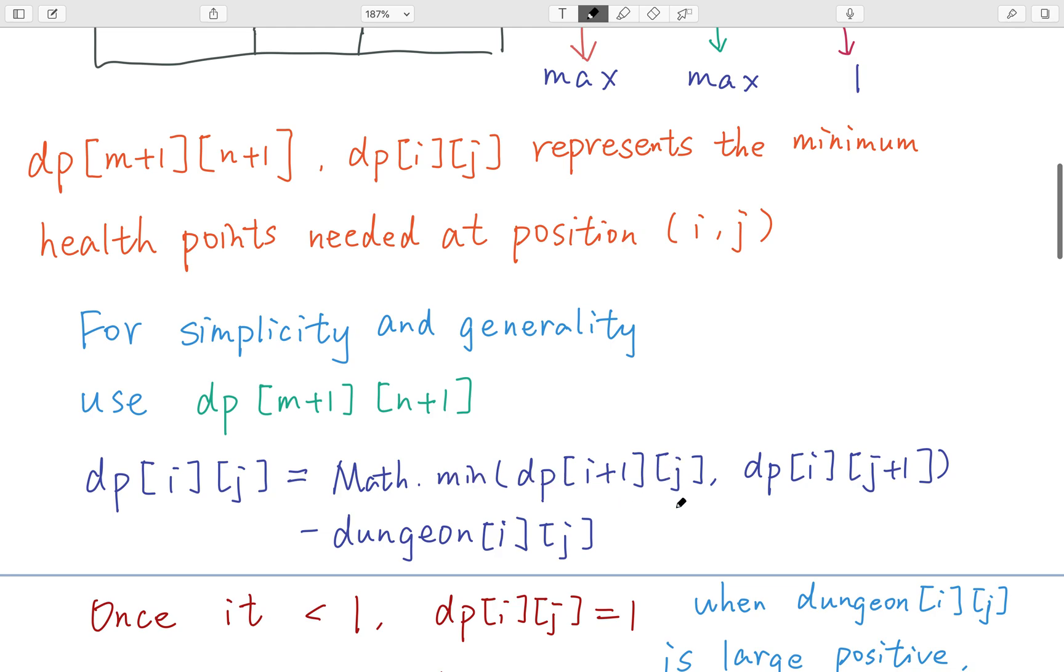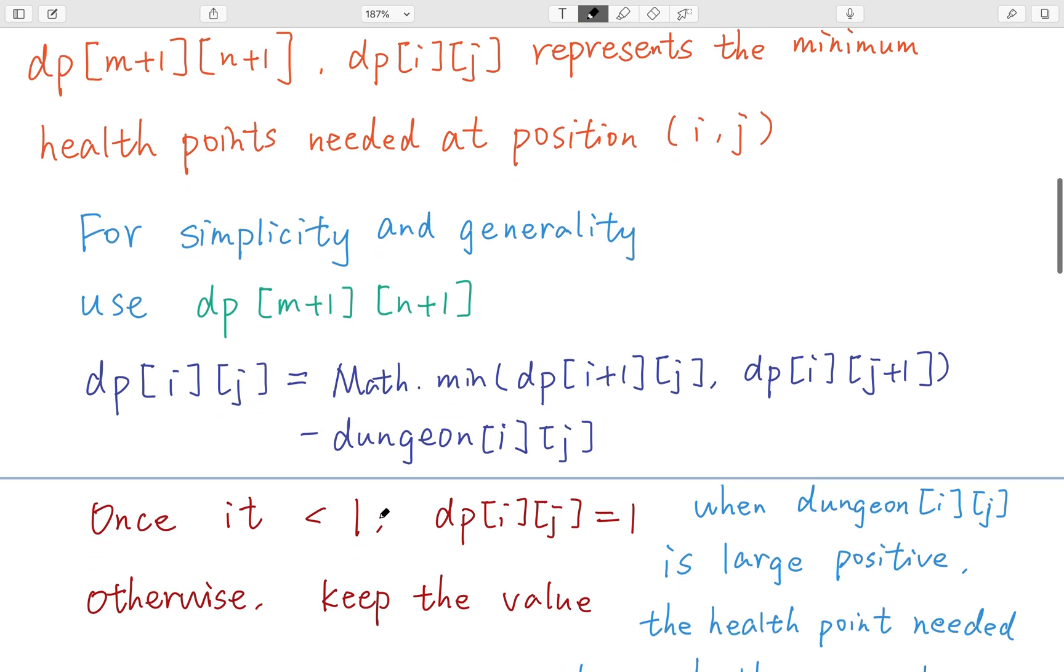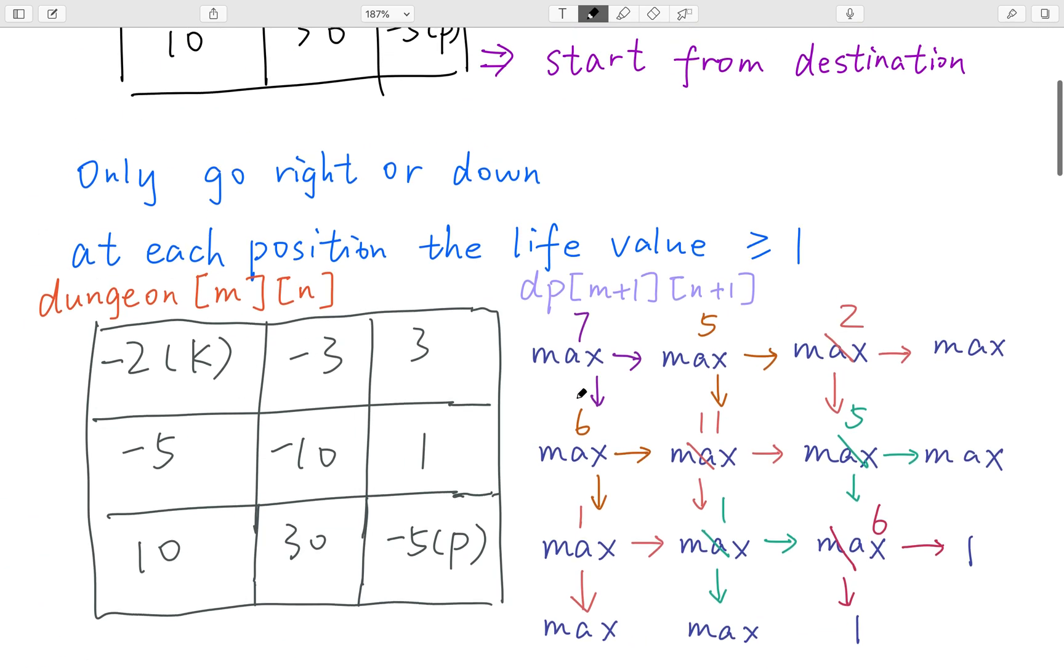Math minimum dp[i+1][j]. This is the next row. And this is the next column. It's minimum minus the dungeon[i][j]. And once this, actually this is not dp[i][j]. This is the minimum dp. If this minimum dp is less than 1, I put this place equal to 1. Otherwise, I just keep the value. So finally, we just return dp[0][0].